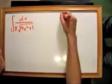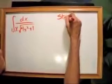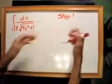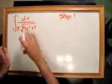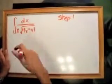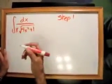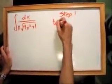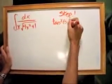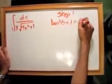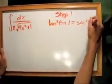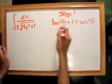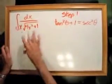So, the first step, step 1, is to take the key pattern and transform it into a trig identity. The trig identity we'll be using for this problem is tangent squared theta plus 1 equals secant squared theta, because this matches this.